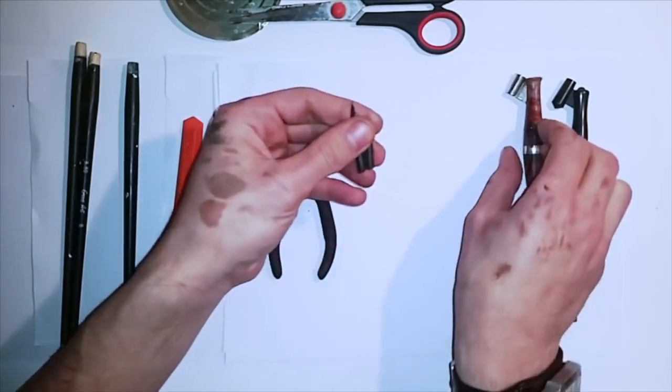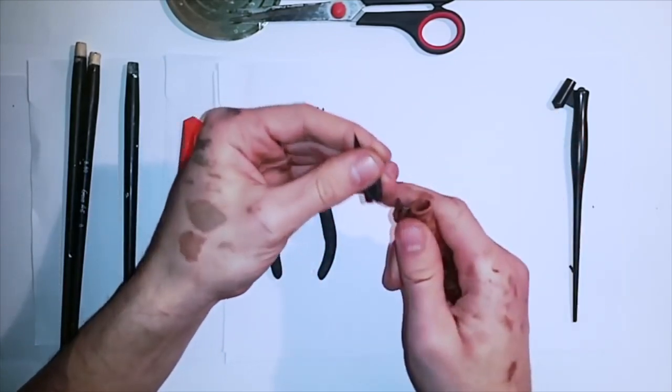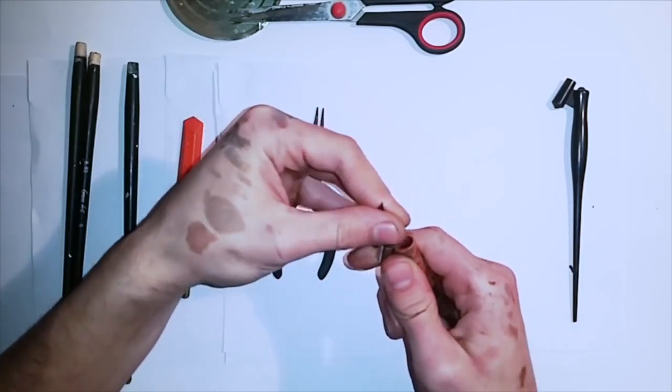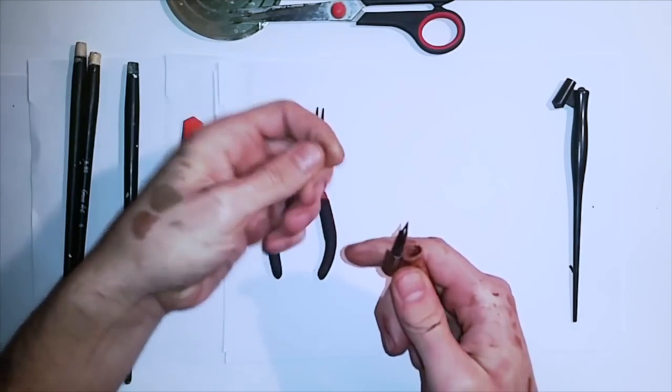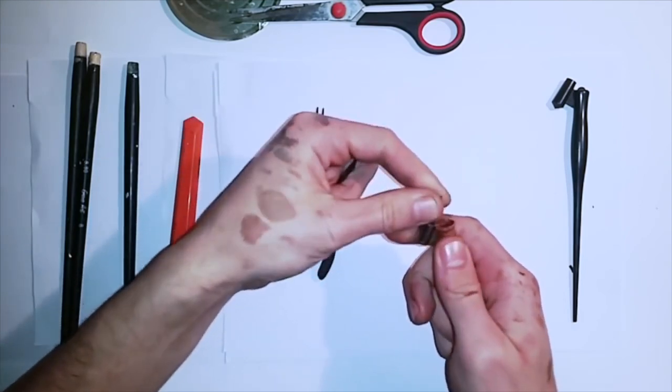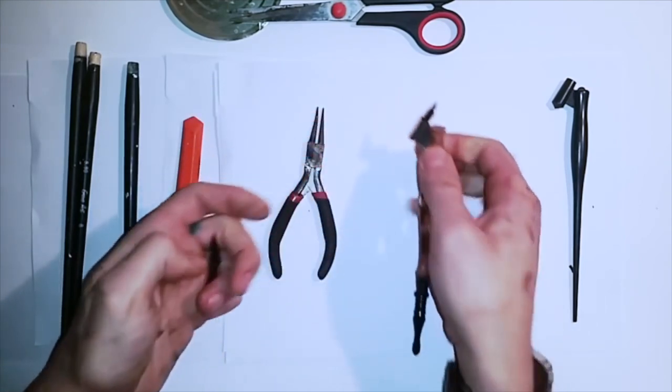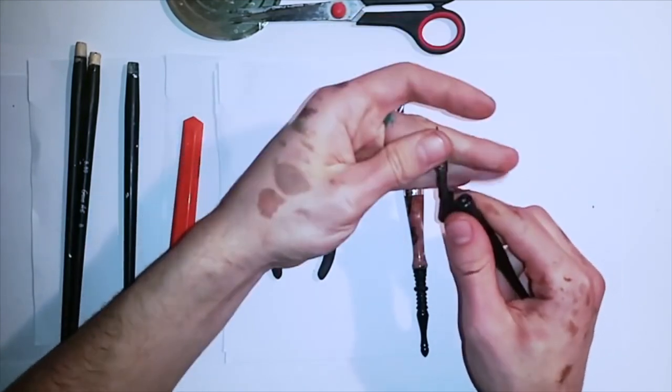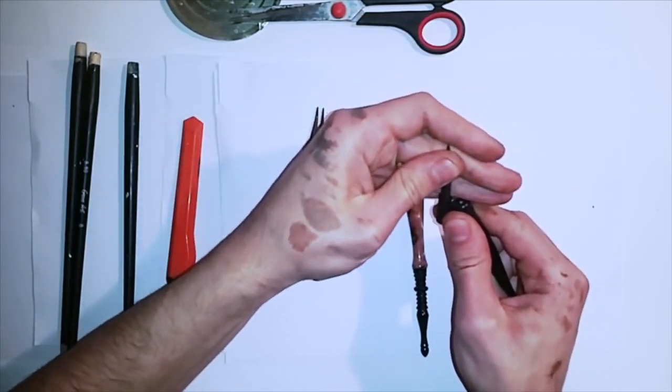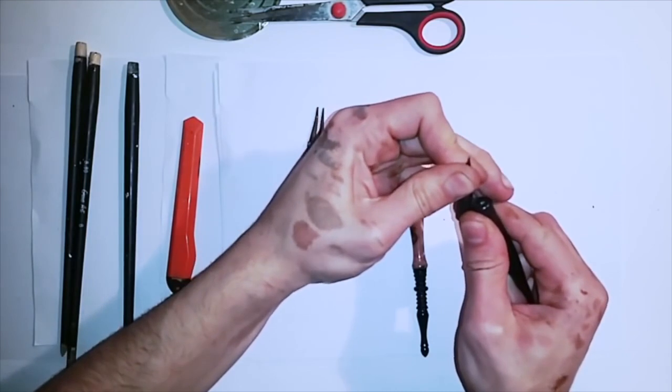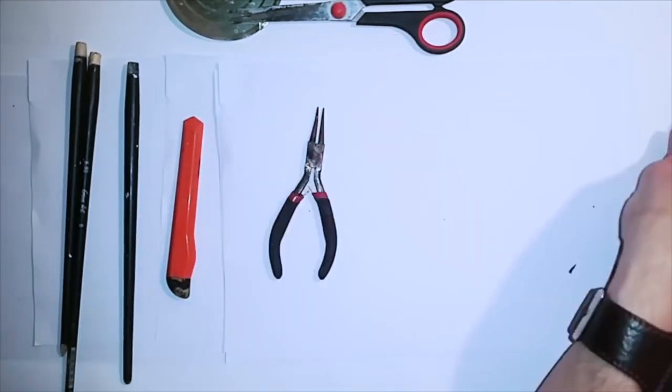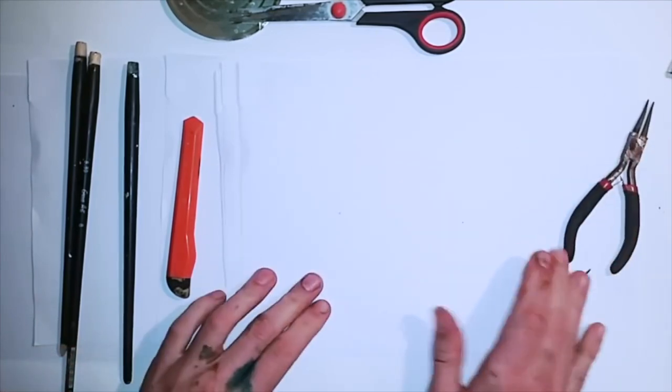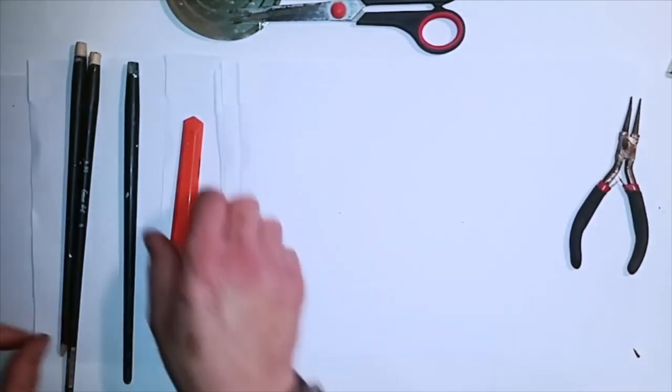You don't need oblique pen holders apparently if you had you don't need to make yourself, but I'm gonna be using those ones just to see the angle of the metal thing that you put the nib on.